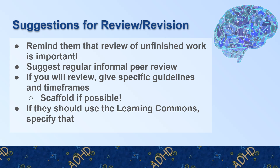Suggestions for review and revision: remind your students that review of unfinished work is actually a good idea. Students get very nervous about showing you something that's not done or not perfect. I want to see it when it's still bad, when you're still working on it, so we can work on that. If they don't want to show it to you, give them ideas — suggest regular informal peer review or even hold informal peer review as part of your class. Give guidelines and timeframes for when you want to look at something. If you can scaffold, I often collect an outline first, then give feedback, then a draft, then give feedback, so they can get their head around review and revision. They could also use the learning commons — go see a tutor, go talk to the writing lab — and specify when that should be done by.